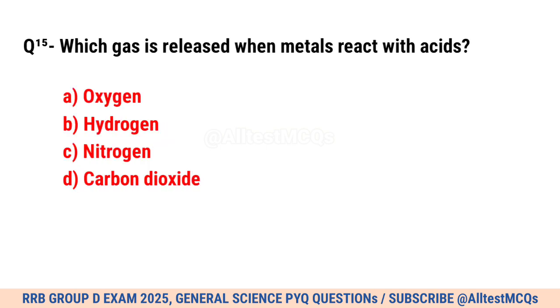Question No. 15. Which gas is released when metals react with acids? Correct option is B. Hydrogen.